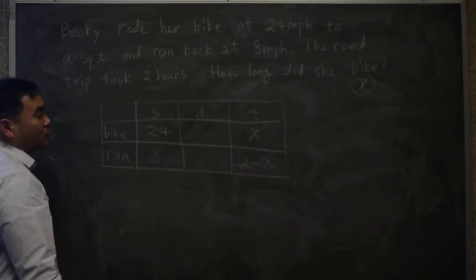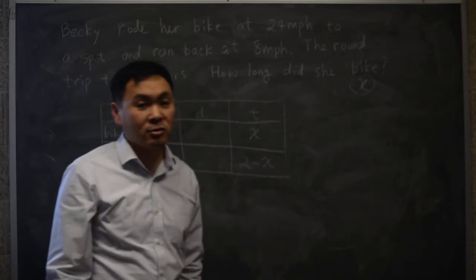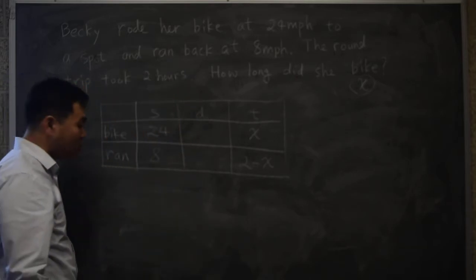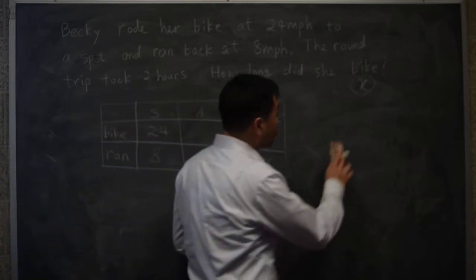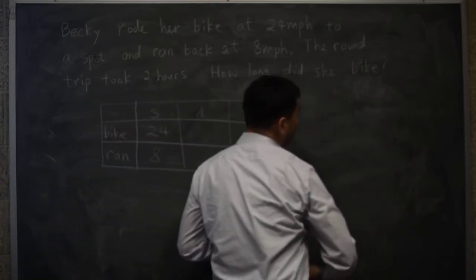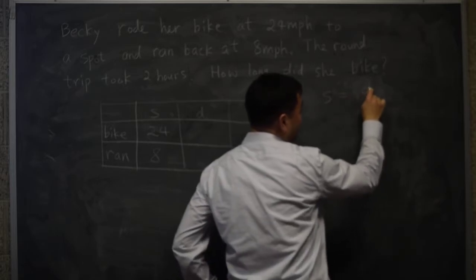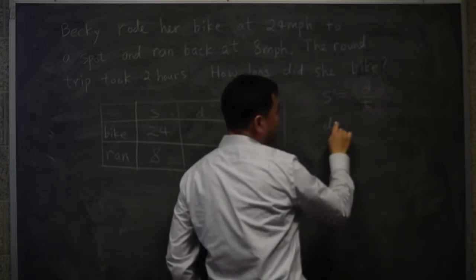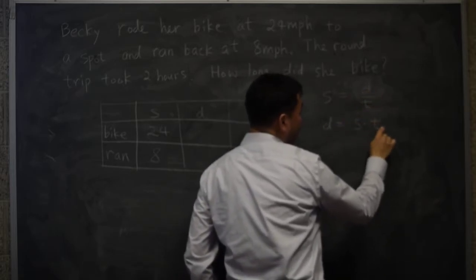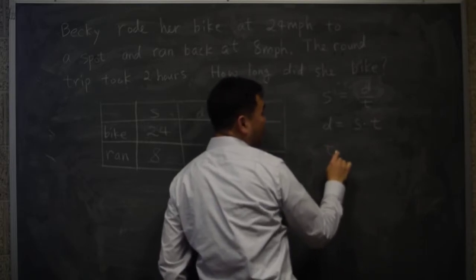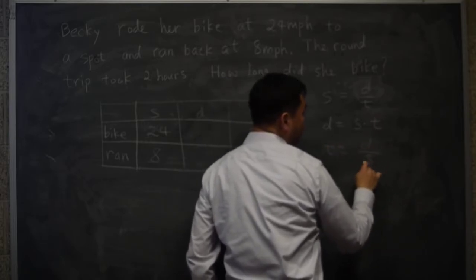And as before, whenever you have these distance, time, speed problems, you need to remember the three formulas: speed is distance over time, distance is speed times time, and time is equal to distance over speed.